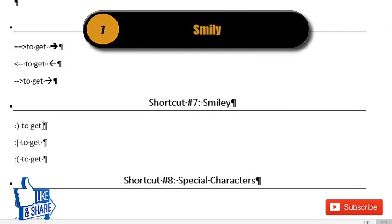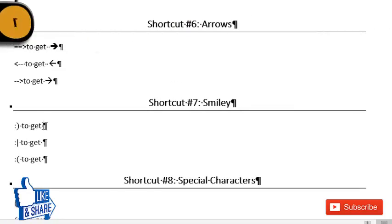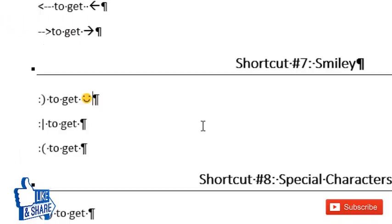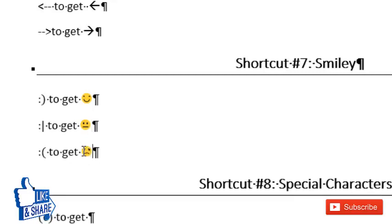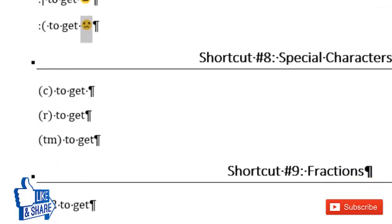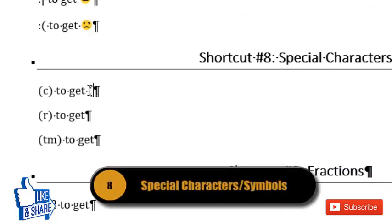To get a smiley in Microsoft Word, it works just like on Android or iOS. Type a colon and closing parenthesis to get a happy smiley, colon and a pipe character to get a neutral smiley, and colon and opening parenthesis to get a sad smiley. This is a cool feature for including smileys in Word.